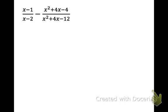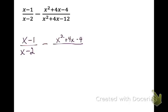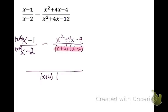Whenever we see quadratics in the denominator, the first thing we want to do is factor them, because it might make finding the common denominator easier. Rewriting the first fraction as is, I look at the next denominator: what multiplies to negative 12 and adds to 4? That would be positive 6 and negative 2, so x squared minus x minus 2 factors to x plus 6 times x minus 2. My common denominator is x plus 6 times x minus 2. The left fraction is only missing x plus 6, so I multiply it, top and bottom, by x plus 6.